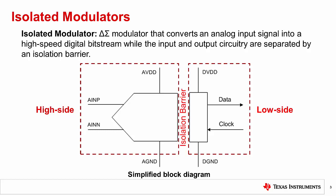In other words, isolated modulators protect one ground from another, isolate certain parts of the same circuit, or separate different circuits from each other.